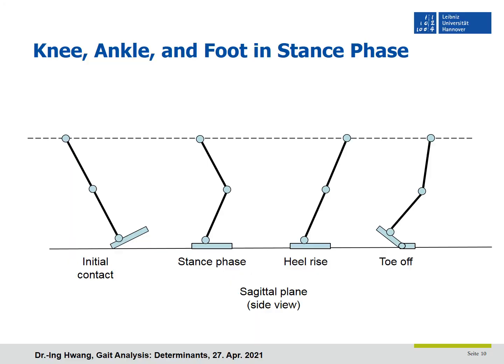We move on to the next determinant. This is the abstract image of the leg in the sagittal plane. With this image, we can explain three determinants. The third determinant is knee flexion in stance phase. We will measure the knee flexion angle in the mid-stance phase.